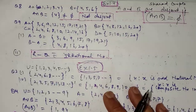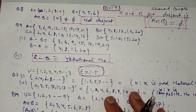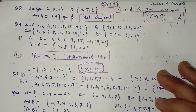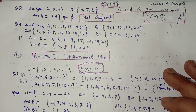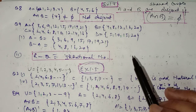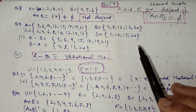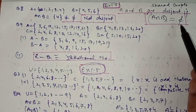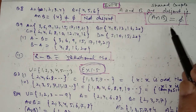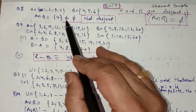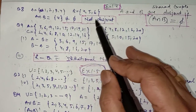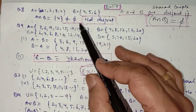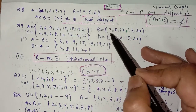In question number 8, you have to find which of the following are disjoint sets. Disjoint sets are those in which there is no common element, or if A intersection B is empty, then A and B are said to be disjoint. To do question 8, find the intersection of the two given sets: if it is empty, they are disjoint; otherwise they are not. In the first part, A intersection B equals {4}, which is not empty, so they are not disjoint.